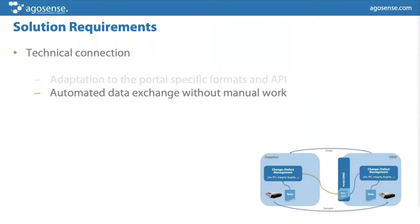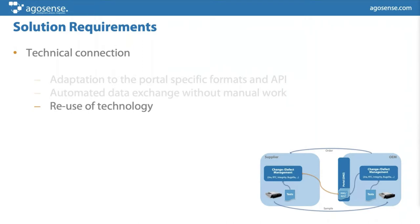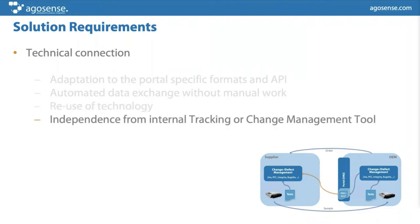The data exchange should be completely automated without any manual work, so each party can work in their own change management system without looking into another system or doing any manual copies from one to the other. You should be able to handle defects coming from your partner through your own lifecycle in your tool. It would be very beneficial to completely reuse the technology — once you've implemented data exchange with a customer for one project, you can reuse almost everything with just minor configuration changes for subsequent projects.